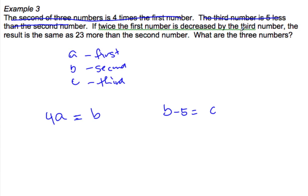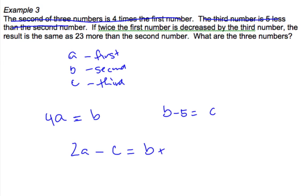Here's the long bit. If twice the first number - let's do this as we read it - so twice the first number is 2A, decreased by the third number, so minus C. The result is the same as 23 more than B, so equals B plus 23.